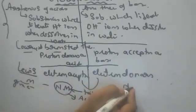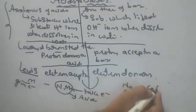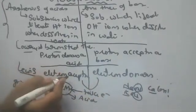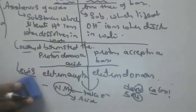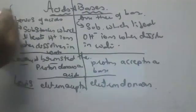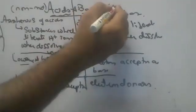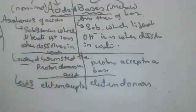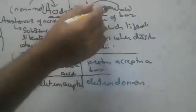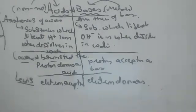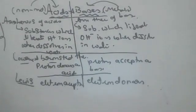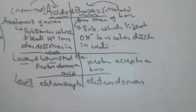Wherever you see metals, they form bases. NaOH is a base, KOH is a base, Ca(OH)2 is a base. It's not related to H+ or OH- anymore — whoever takes electrons is an acid, whoever gives electrons is a base. So non-metals form acids and metals form bases. Don't ever forget this.